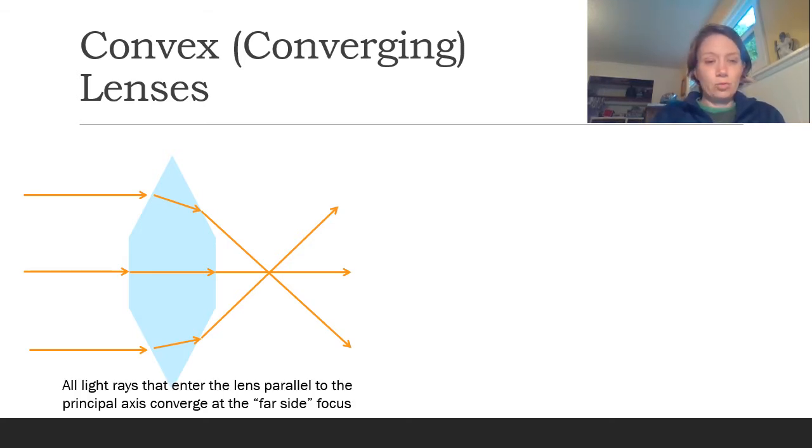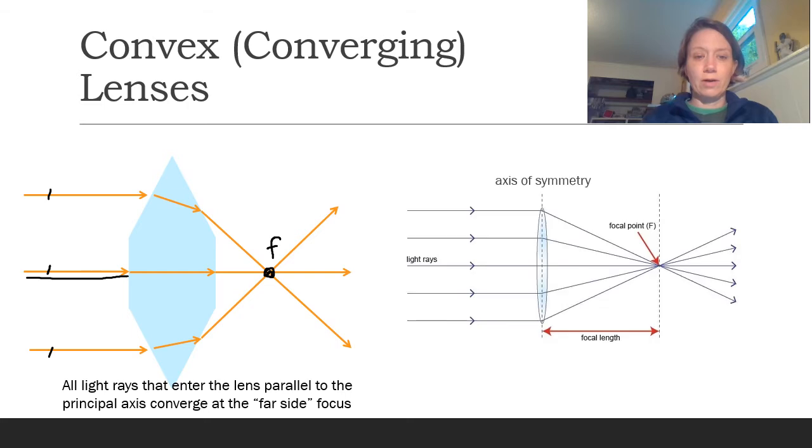The rule on convex lenses is very similar to mirrors, which is that all light rays that enter the lens parallel to the principal axis converge at a focus on the far side of the mirror. So this is a new focus. The only difference between this converging lens and a converging mirror is which side of the device it's on.